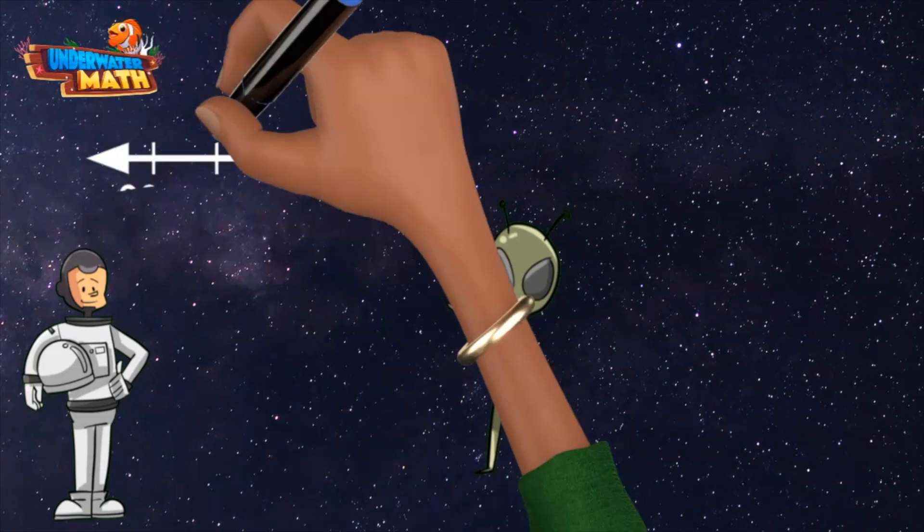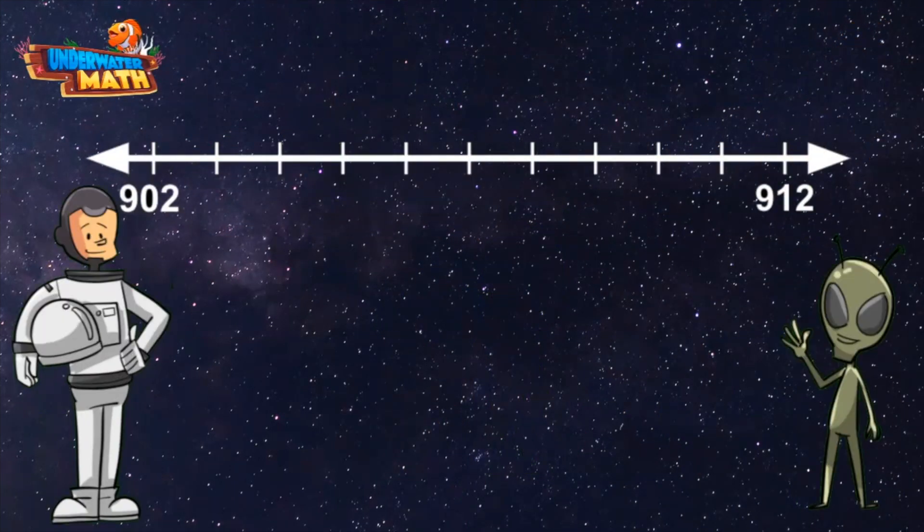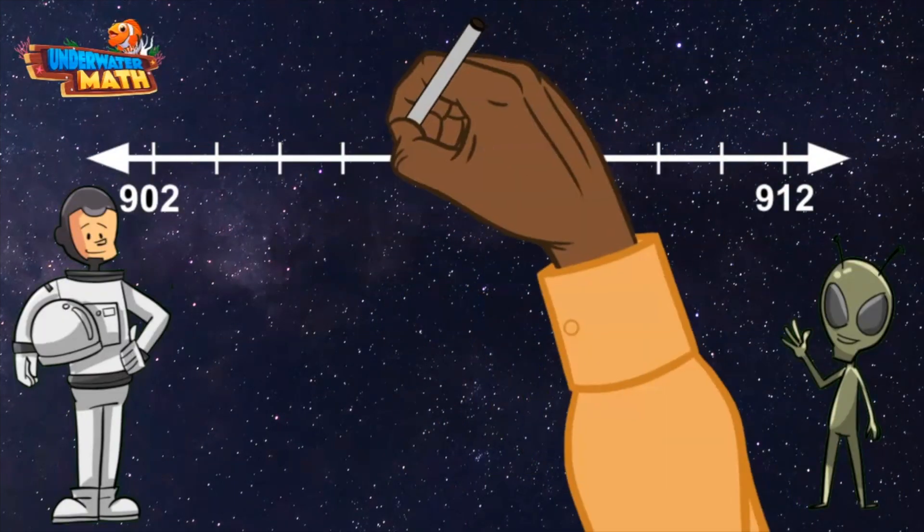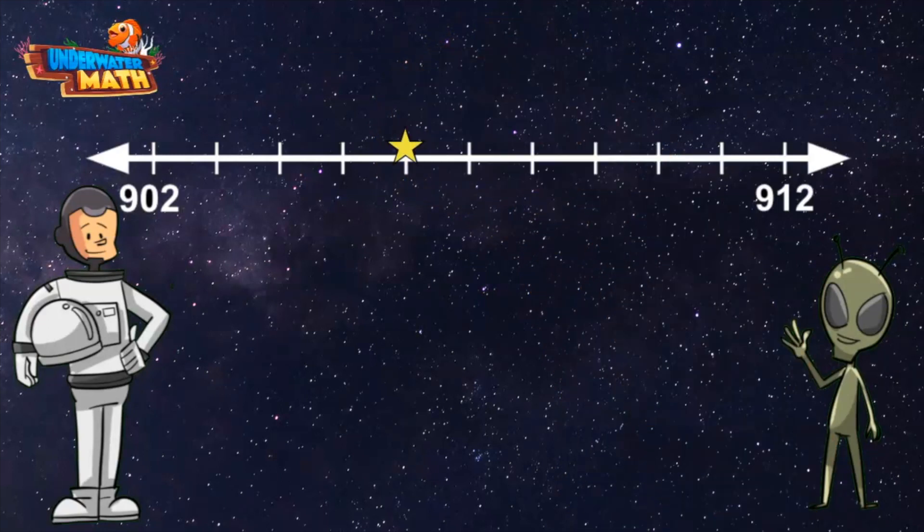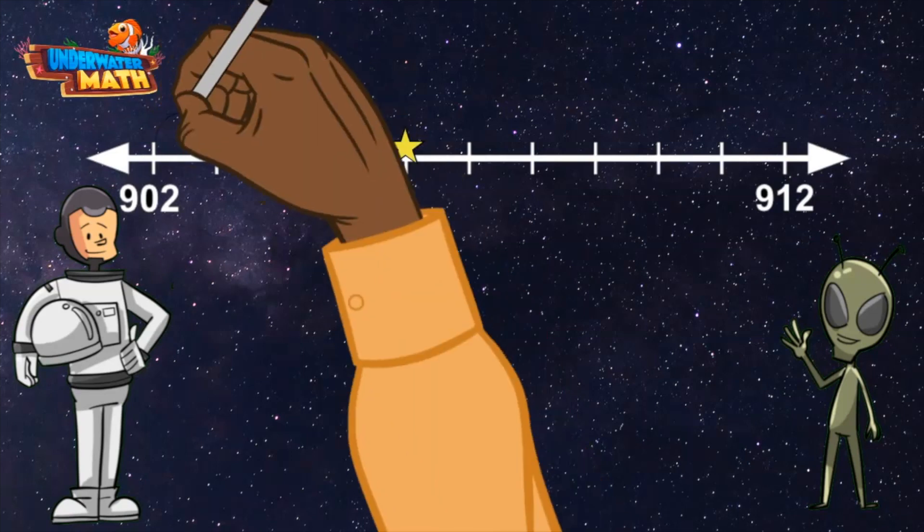number line that starts at 902 and ends at 912. You are the best, thanks! Now I'm going to put the star right here. What number does the star represent this time? Let's start at 902 and count up: 903...